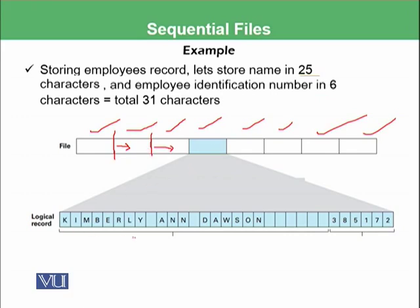For example, we want to store a name like this. We have saved 'Kimberley Dawson' as a name and there are some empty spaces. We have 25 characters which we can store, so 19 characters have been used and 6 characters are left blank — we store spaces in those remaining characters. Then we start storing the identification number in the next 6 characters.